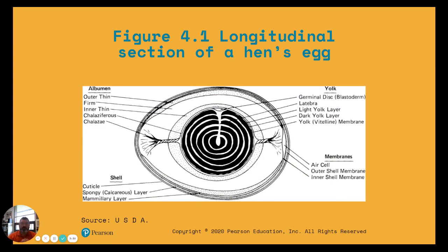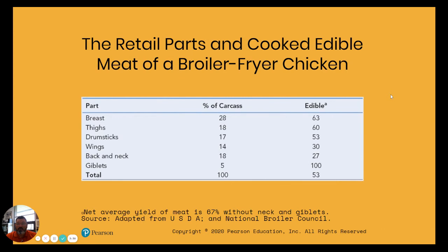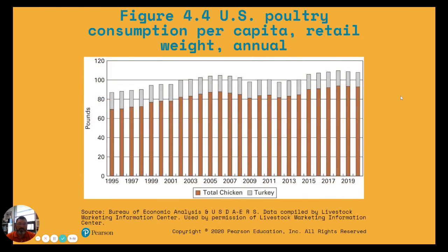Here's a cross-section of an egg to give you the features and anatomy and what it looks like. The retail parts and cooked edible meat of a broiler fryer chicken — from the breast all the way down to the giblets — show what percent of the carcass each part is and what percent is edible. It's interesting to know what you can utilize there.